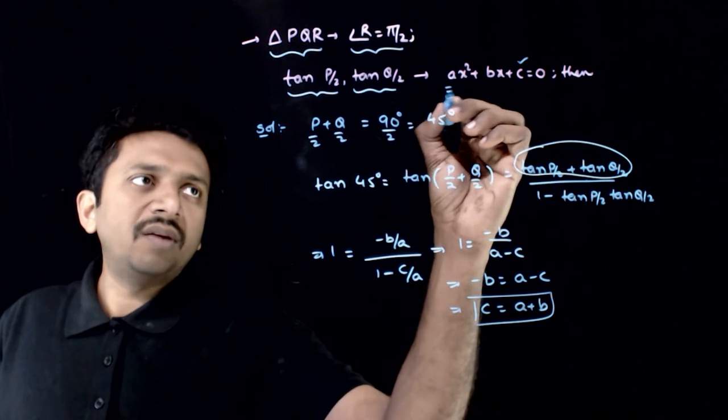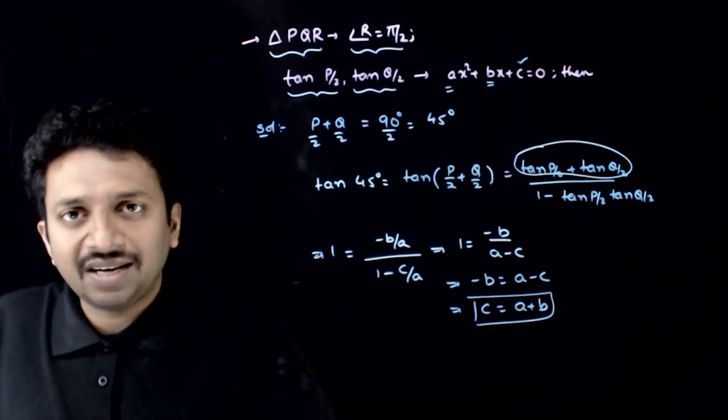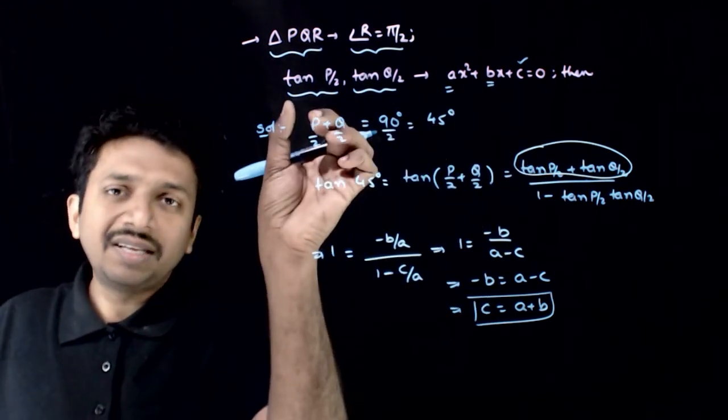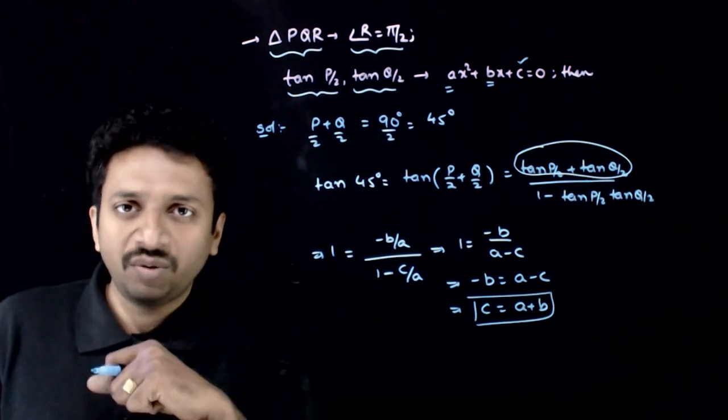The value of C has to be equal to A plus B. That is the condition which ensures that tan P by 2 and tan Q by 2 are the roots of this equation. Thank you.